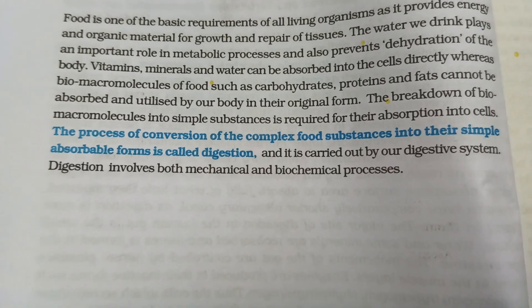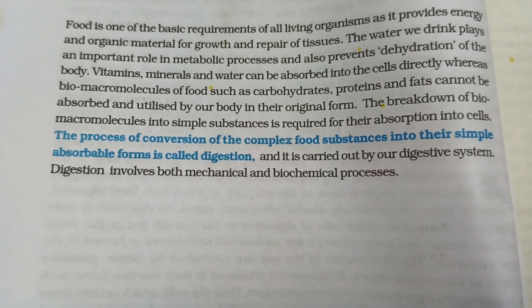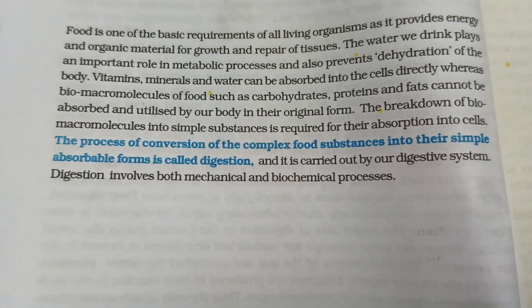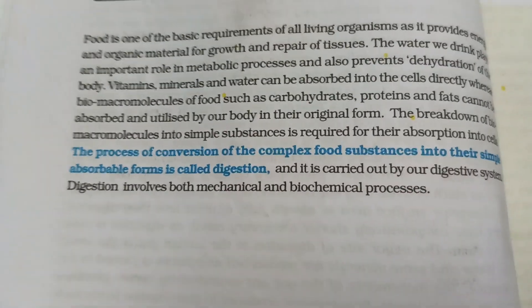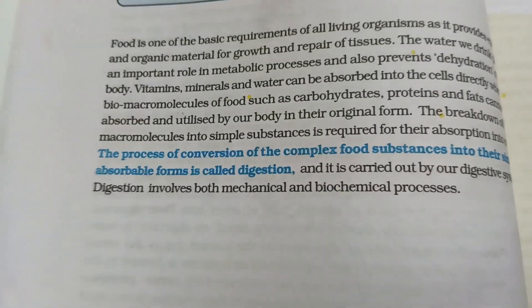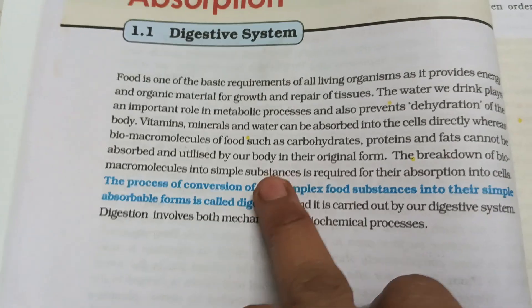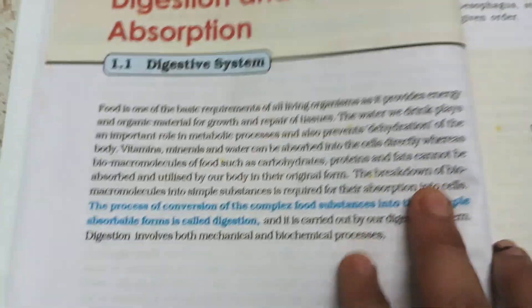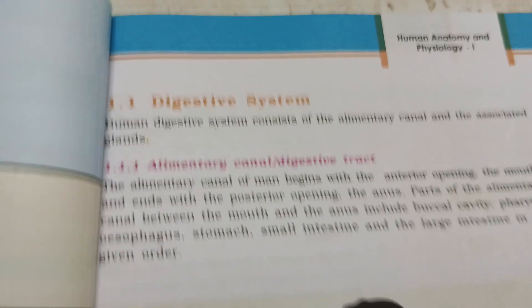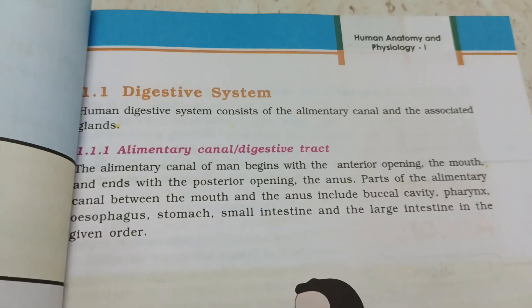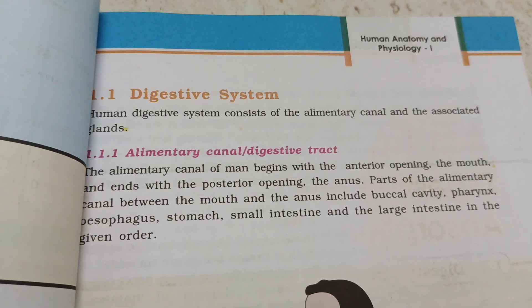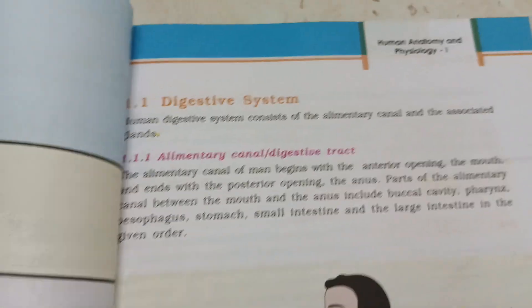Digestion involves both mechanical and biochemical processes. So digestion is the conversion of complex forms into simple forms. The digestive system consists of the alimentary canal and associated glands.